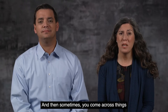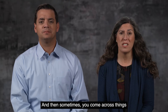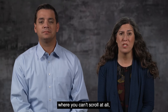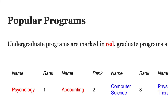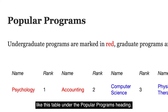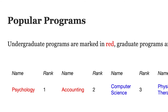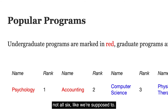And then sometimes you come across things where you can't scroll at all, like this table under the popular programs heading. We can only see three and a half program names, not all six like we're supposed to.